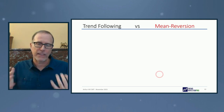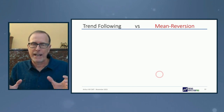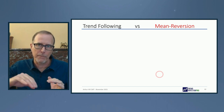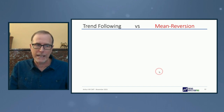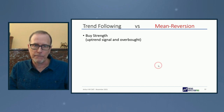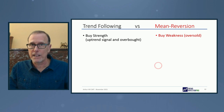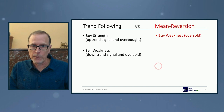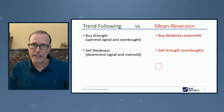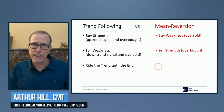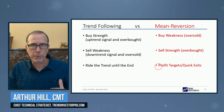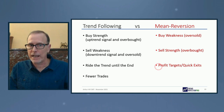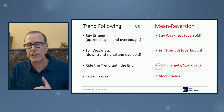Trend following versus mean reversion — these are the two main strategies. With trend following you're buying when things are going up and strong; with mean reversion you're buying on a pullback when there's short-term weakness. Trend following: you buy on the uptrend signal — typically when it's overbought — and you sell on weakness when you get a downtrend signal. Mean reversion: you buy when oversold on the pullback and sell when it gets overbought. With trend following you ride the trend until the end; with mean reversion you typically have profit targets and relatively quick exits.